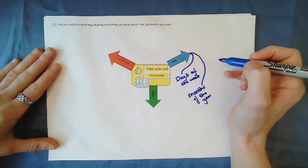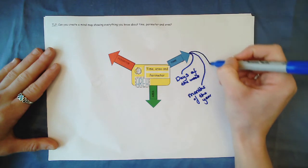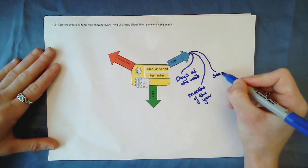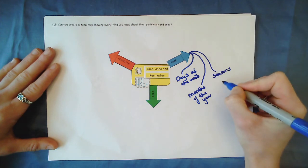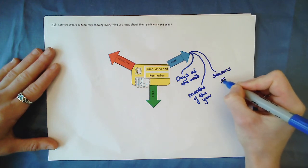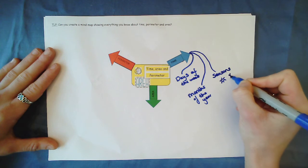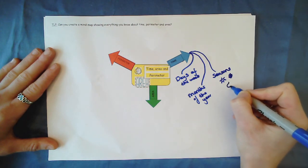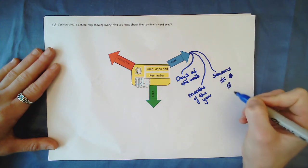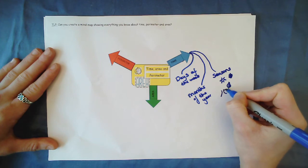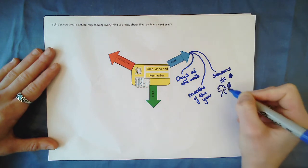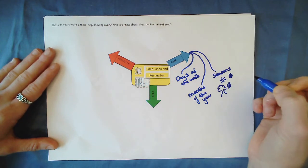Oh and we know about the seasons. That's to do with time isn't it? I might maybe draw some pictures there. I'm going to draw sun and that is supposed to be a snowflake and a leaf for autumn maybe and a nice tree for spring. Summer, winter, autumn and spring.